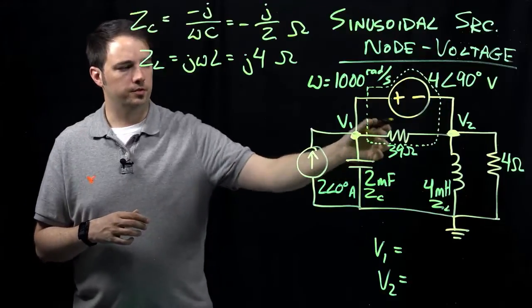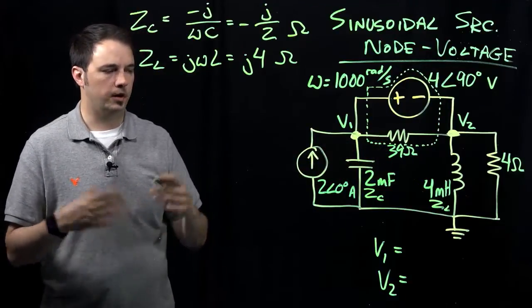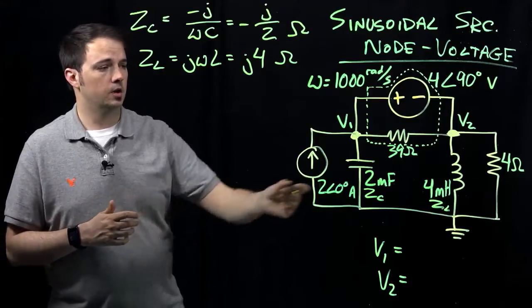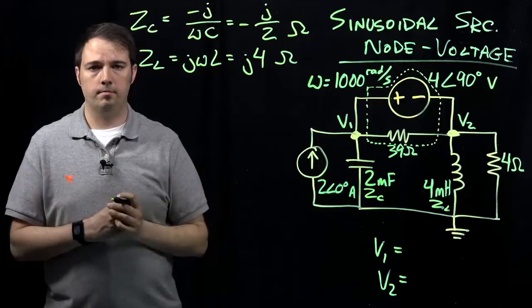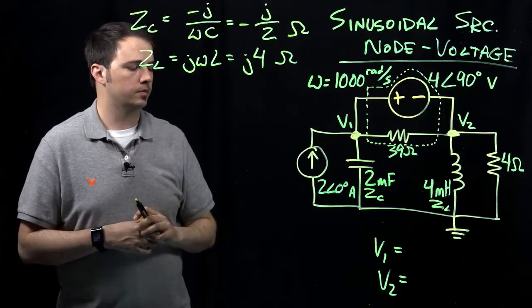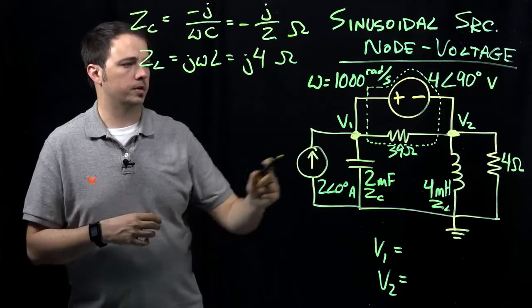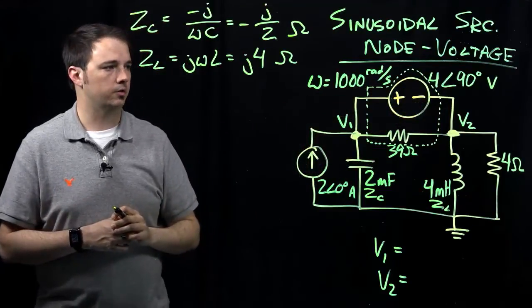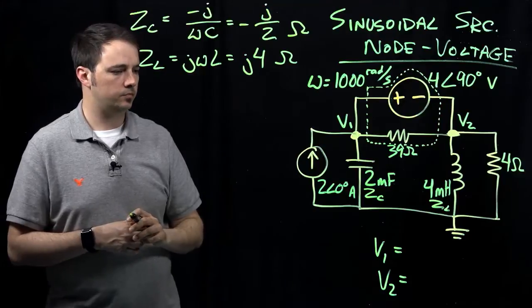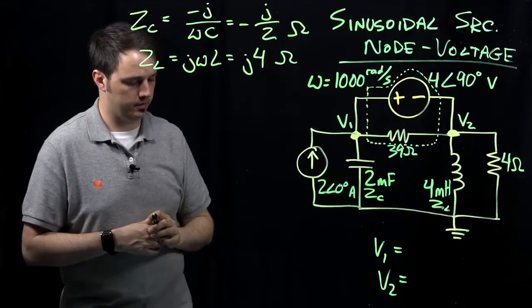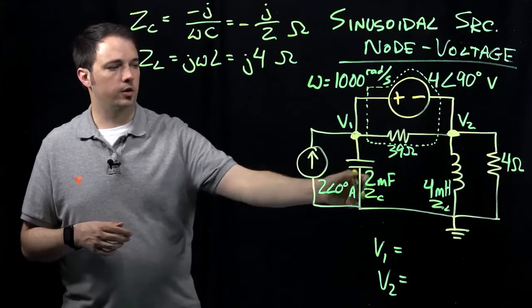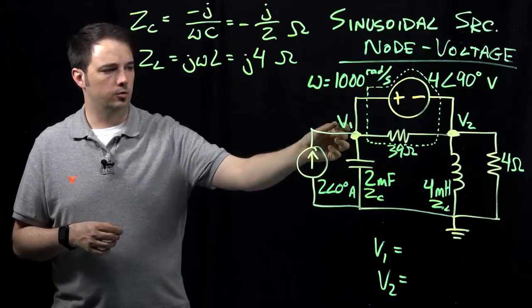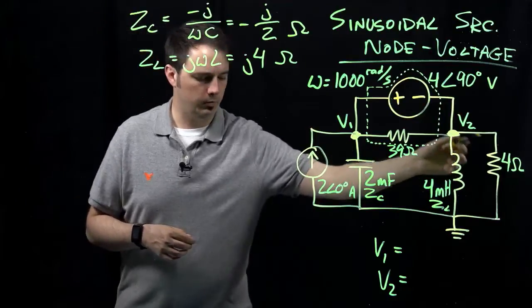Also note that this 39 ohm resistor here is really going to have no impact on the solution because the voltage across that 39 ohm resistor is the same voltage given by the source there specifically. So we won't really need to include that information separately. Let's go ahead and start writing our node voltage equation. We'll start on this side and then evaluate what we have over here.